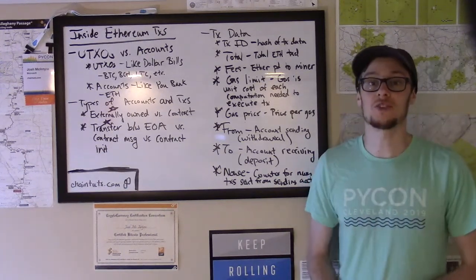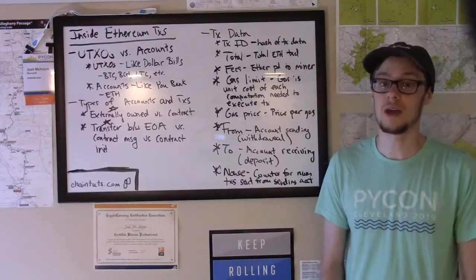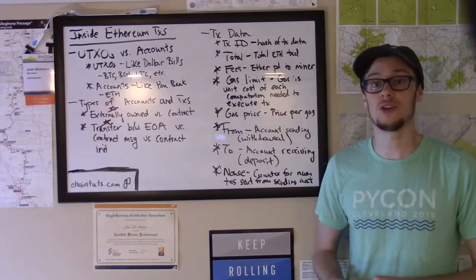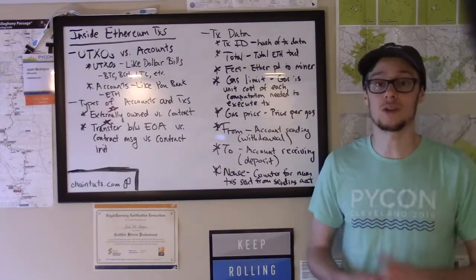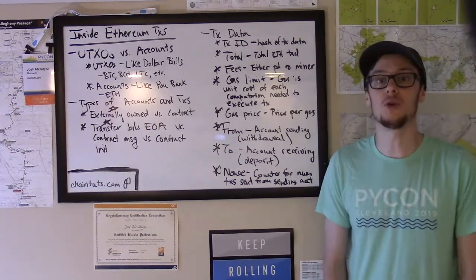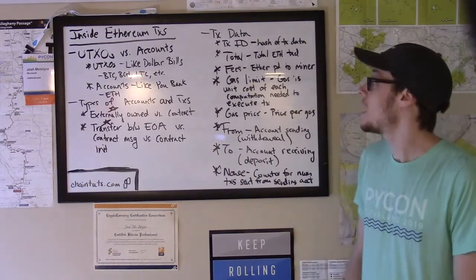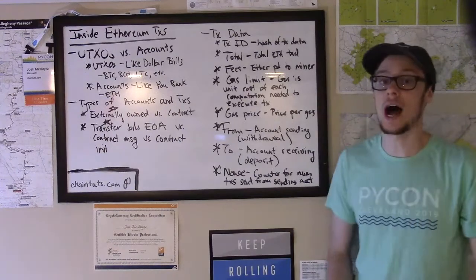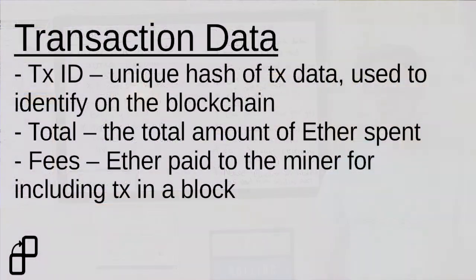Now let's talk about the specifics of what goes on inside an Ethereum transaction — the different bits of data involved and what each piece means. The first thing you might see on a block explorer like blockchain.info is a transaction ID, which is a unique hash of data contained in the transaction, used to uniquely identify that transaction on the blockchain.